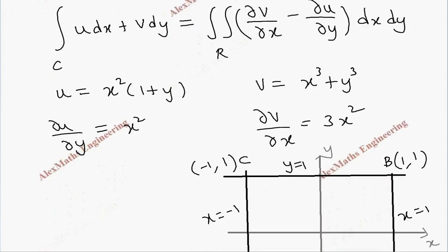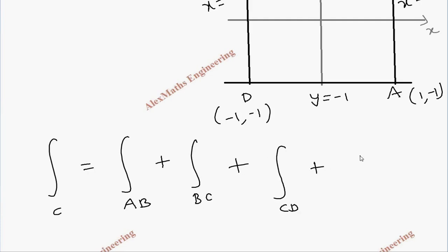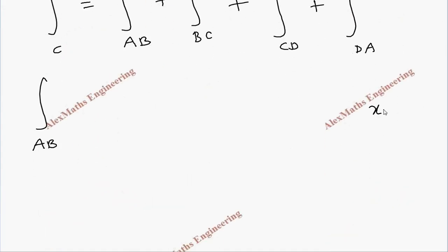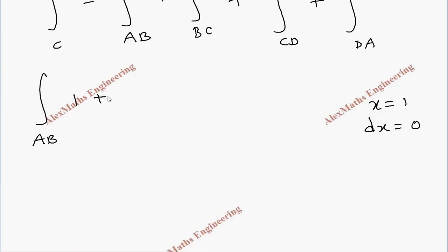For the left-hand side, we split the closed path C into four parts: AB, BC, CD, and DA. For path AB, the equation is x = 1, so dx = 0. The first term vanishes, and when x = 1, the integrand reduces to (1 + y³) dy.